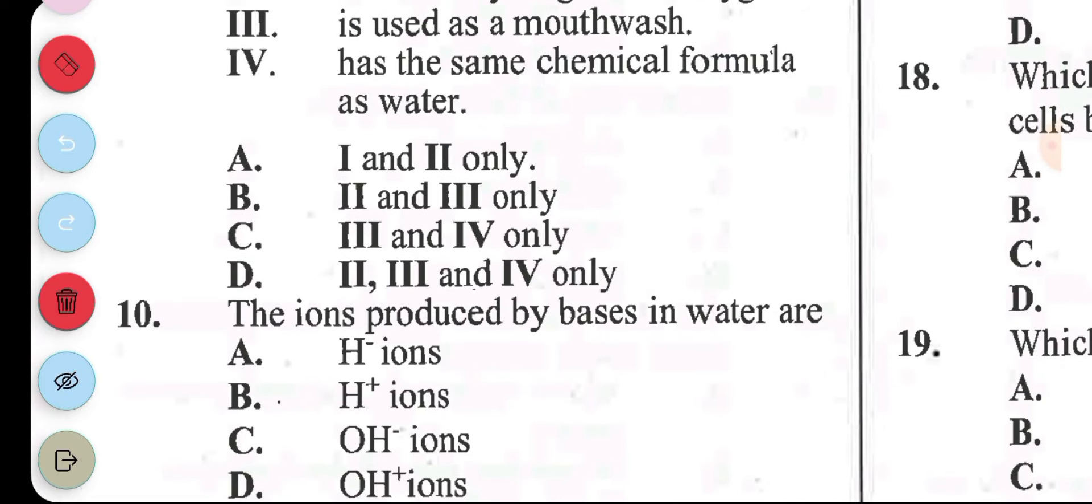Question 10: the ions produced by bases in water are A, H minus ions, B, H plus ions, C, OH minus ions, D, OH plus ions. The answer to question 10 is C, OH minus ions.